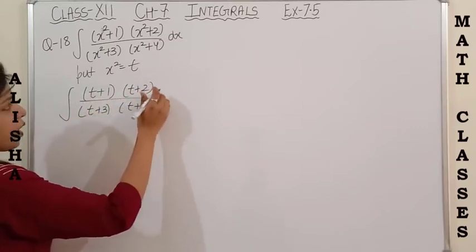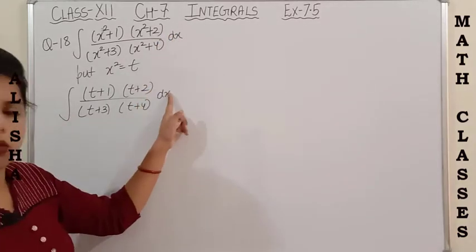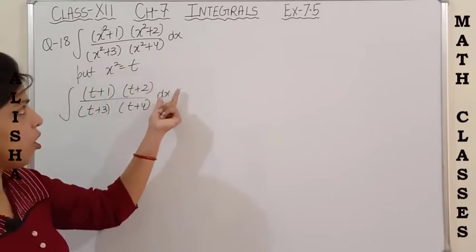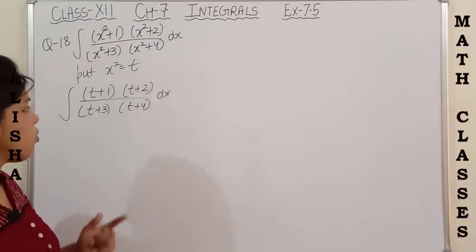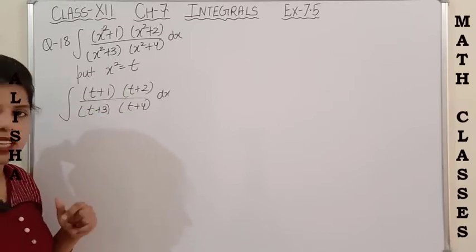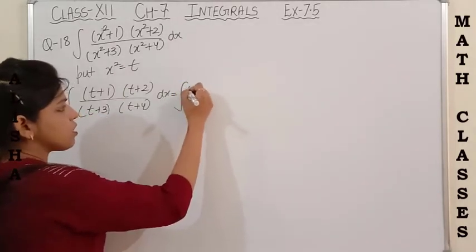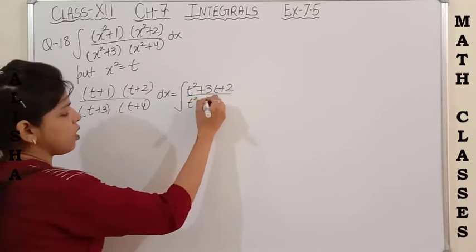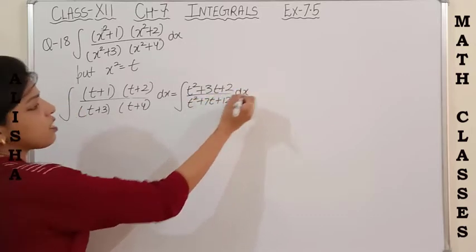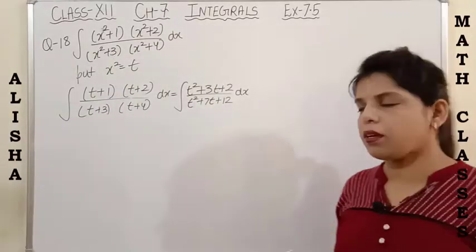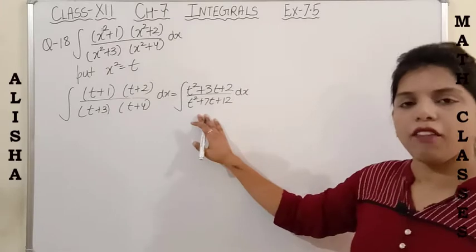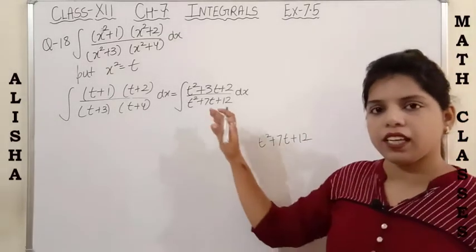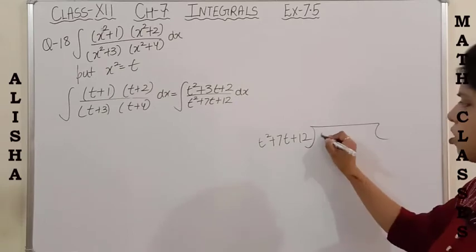Remember here that the integration will not change because it is with respect to x. I have not taken differentiation; I have not replaced dx by dt, so it will remain dx. Both terms in the numerator and denominator are quadratic. If you simplify, you will get (t²+3t+2) upon (t²+7t+12). Whenever the degree of the numerator and denominator are the same, we have to do long division, because we can do integration only when the degree of the numerator is less than the denominator.